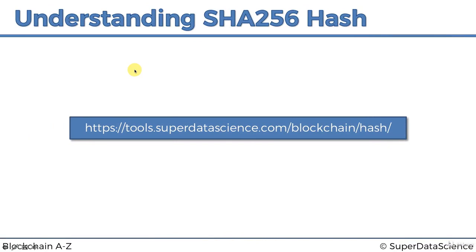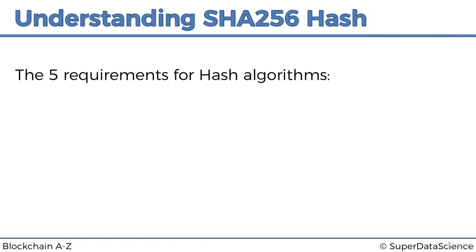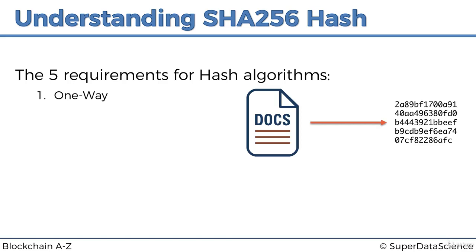Now let's look at the five requirements for hash algorithms. SHA-256 is not the only one — there's also SHA-512, SHA-3, and others. However, for a hashing algorithm to be useful, it must meet certain requirements. Number one: it has to be one-way — you cannot go backwards from the hash to the document; you cannot reverse-engineer the original document from its hash.